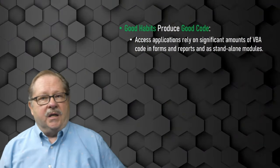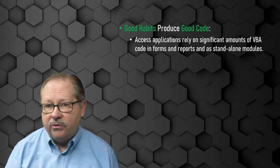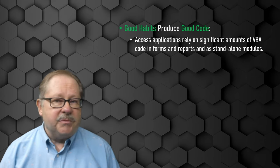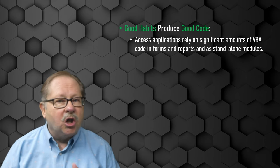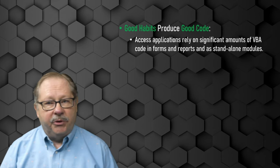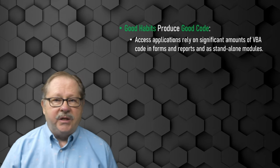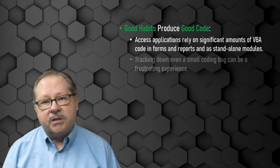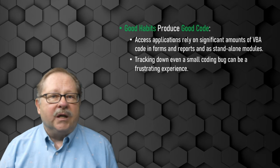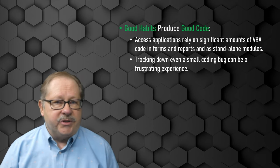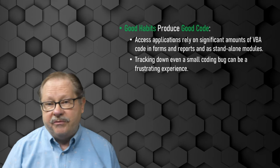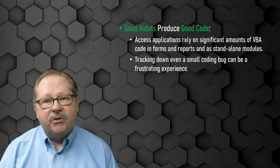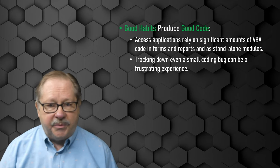Many applications rely on a significant amount of VBA code in forms and reports, also as standalone modules. Because of its power and flexibility, VBA is used for all aspects of application development, from communicating with the user to messaging and transforming data on the way from tables and queries to forms and reports. Depending on how well organized the code is and whether simple conventions, such as providing descriptive names for variables and procedures were followed, tracking down even a small coding bug can be a frustrating experience.